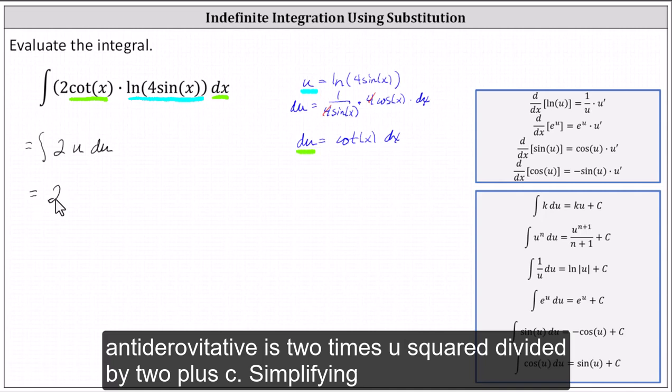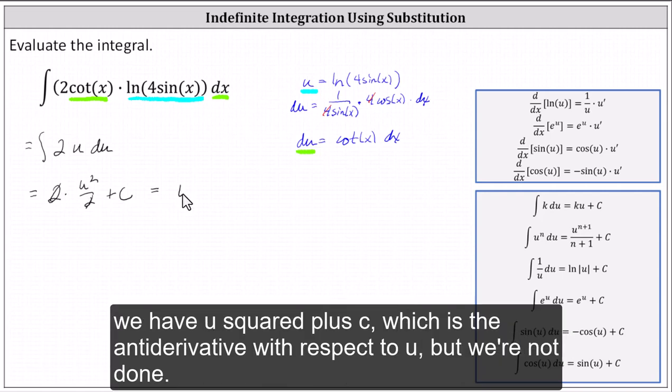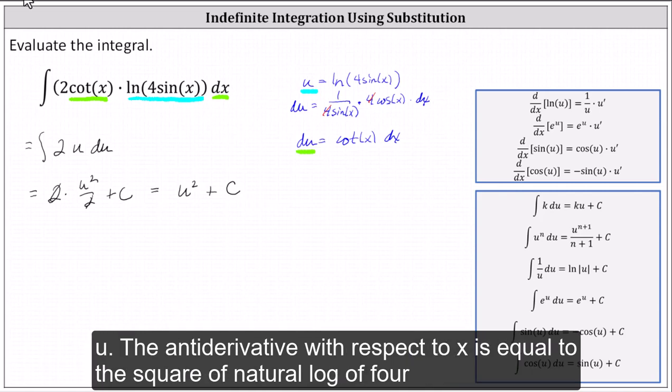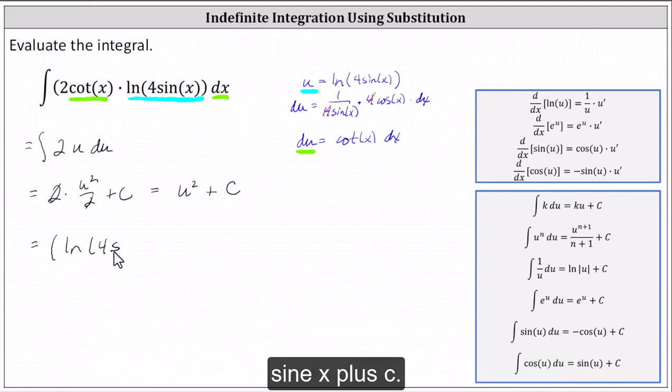The antiderivative is two times u squared divided by two plus c. Simplifying, we have u squared plus c, which is the antiderivative with respect to u. But we're not done. We want the antiderivative with respect to x. So now we substitute natural log four sine x for u. The antiderivative with respect to x is equal to the square of natural log of four sine x plus c.